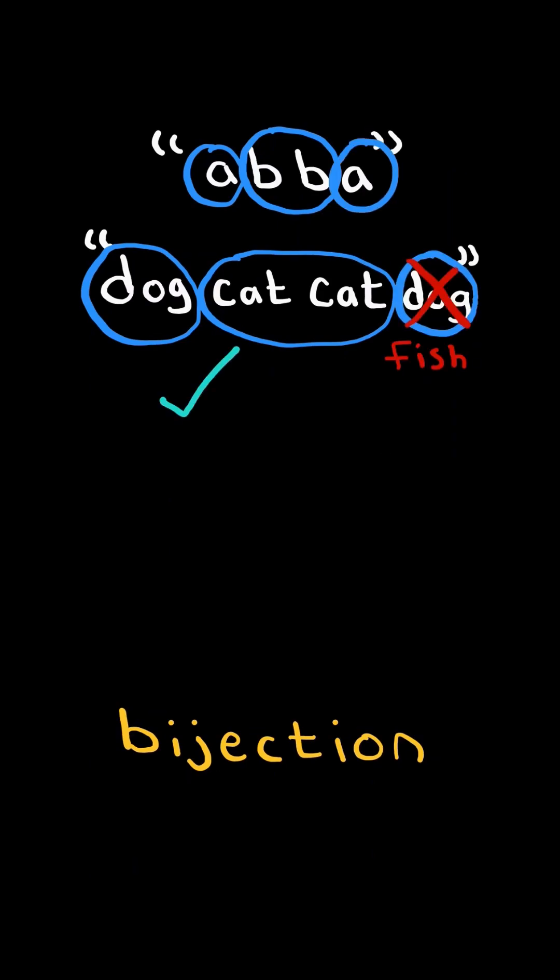Assume we had fish as the last word. Since we already mapped A to dog, we cannot map A to fish. So this is not a bijection. We will solve this in O of N time.